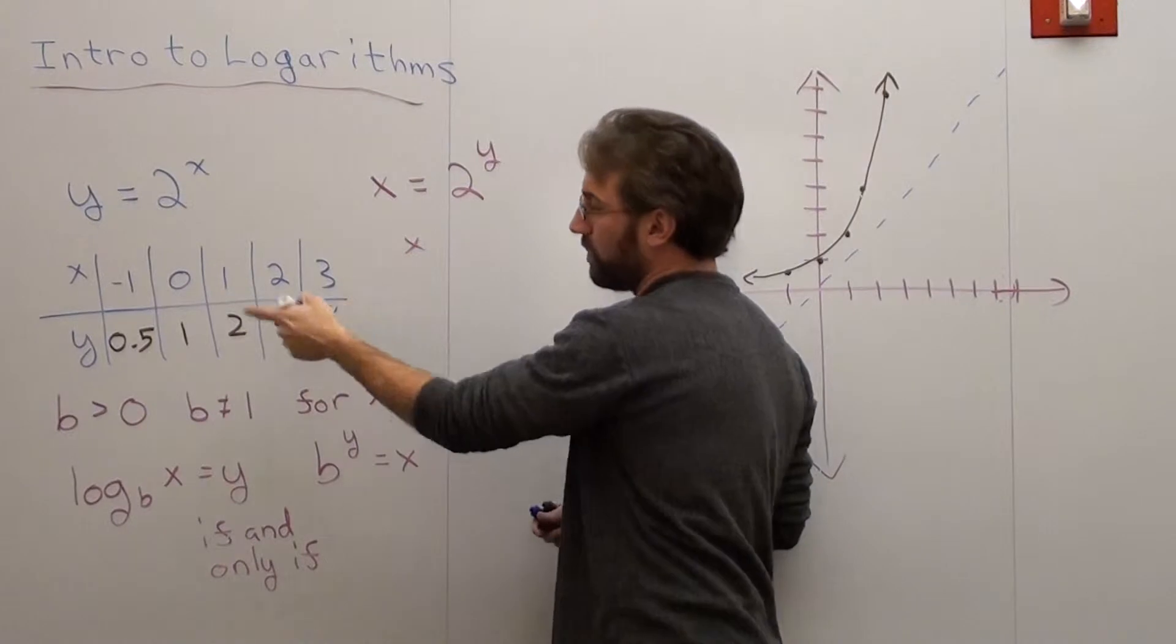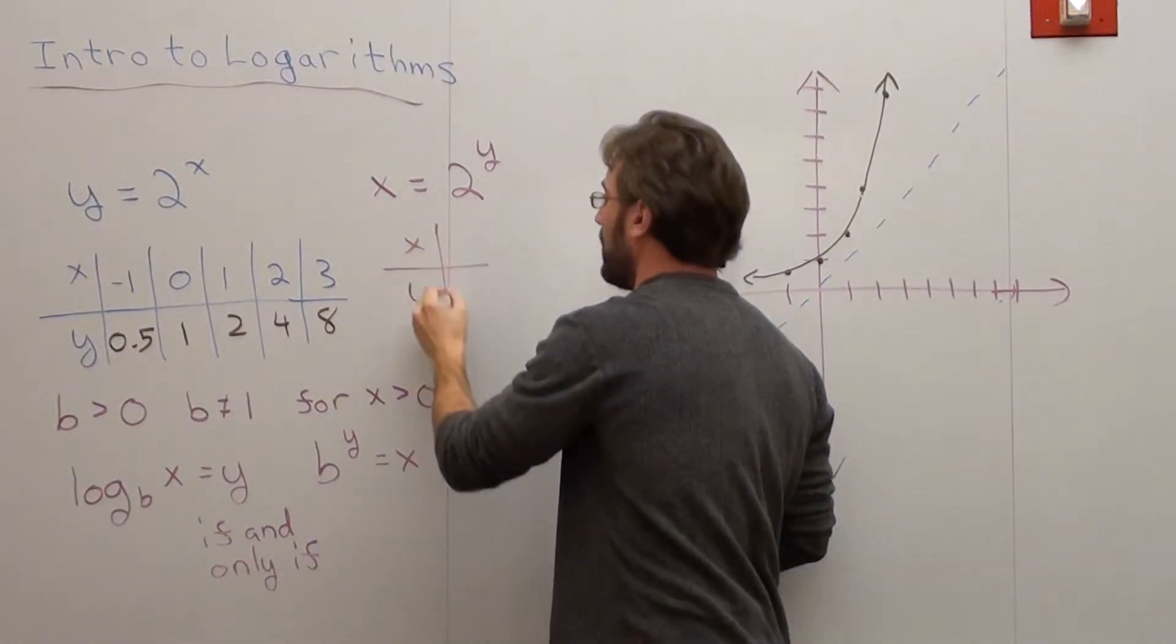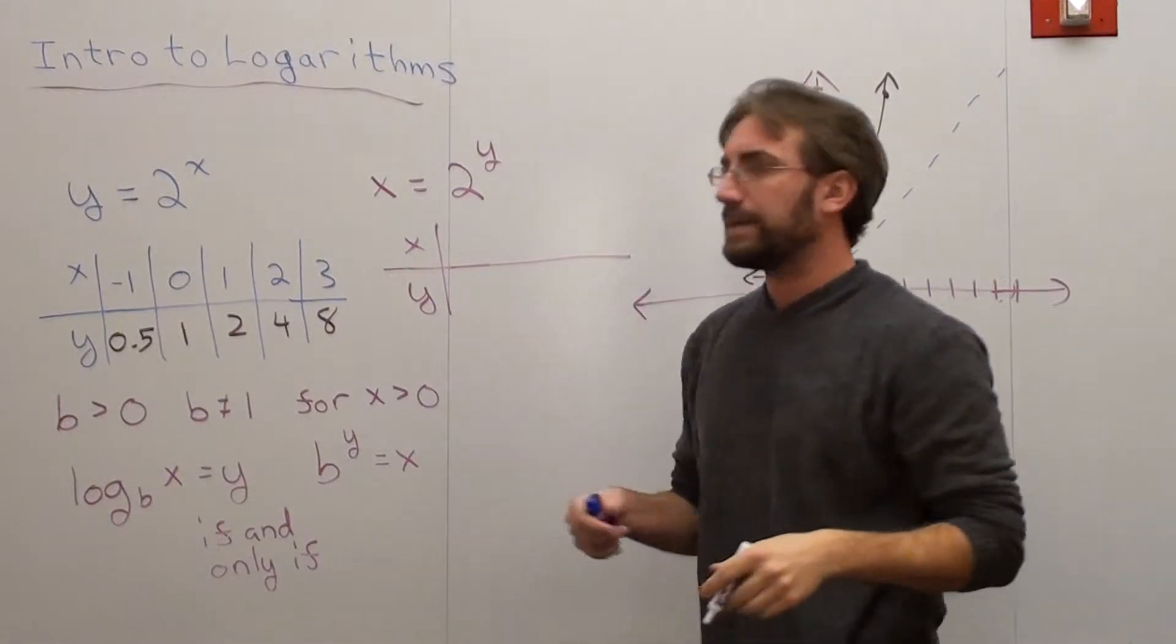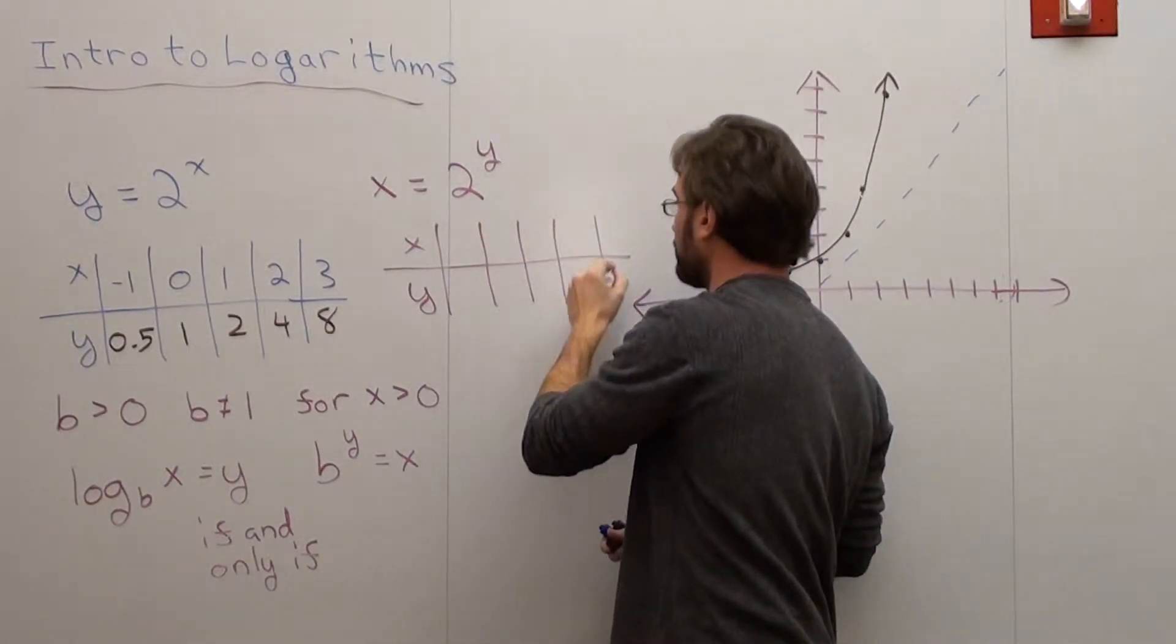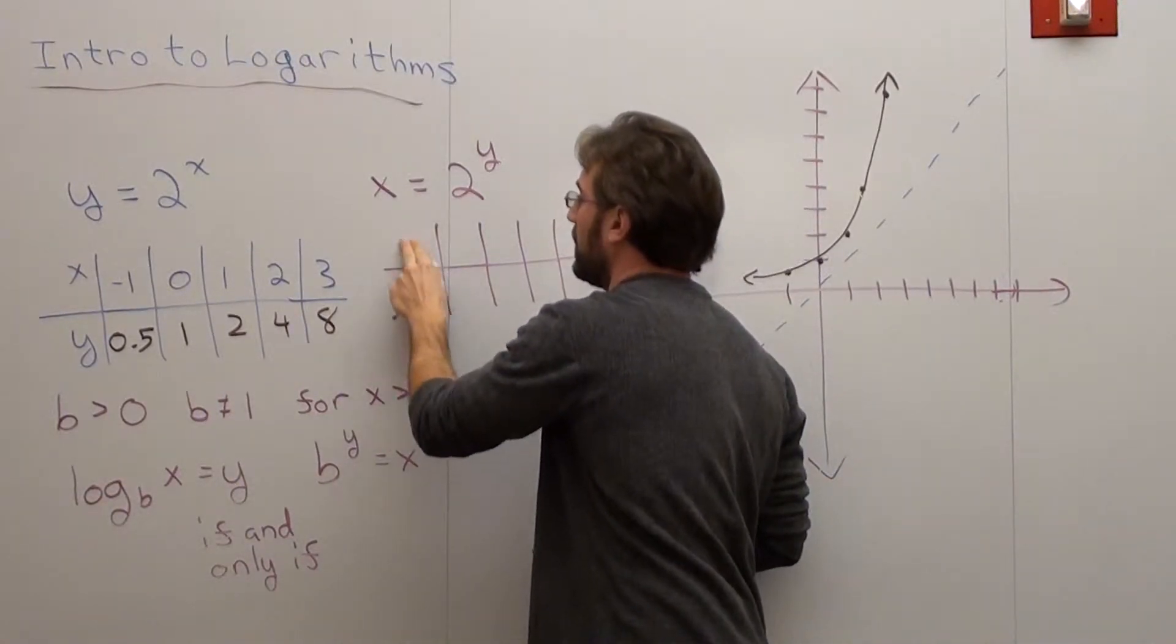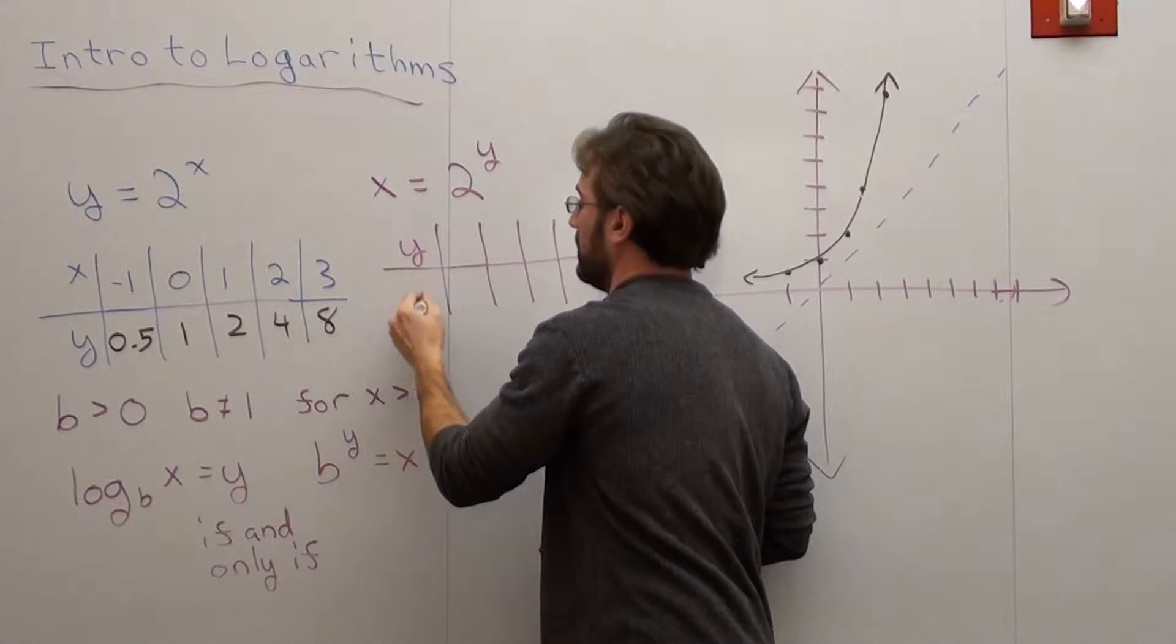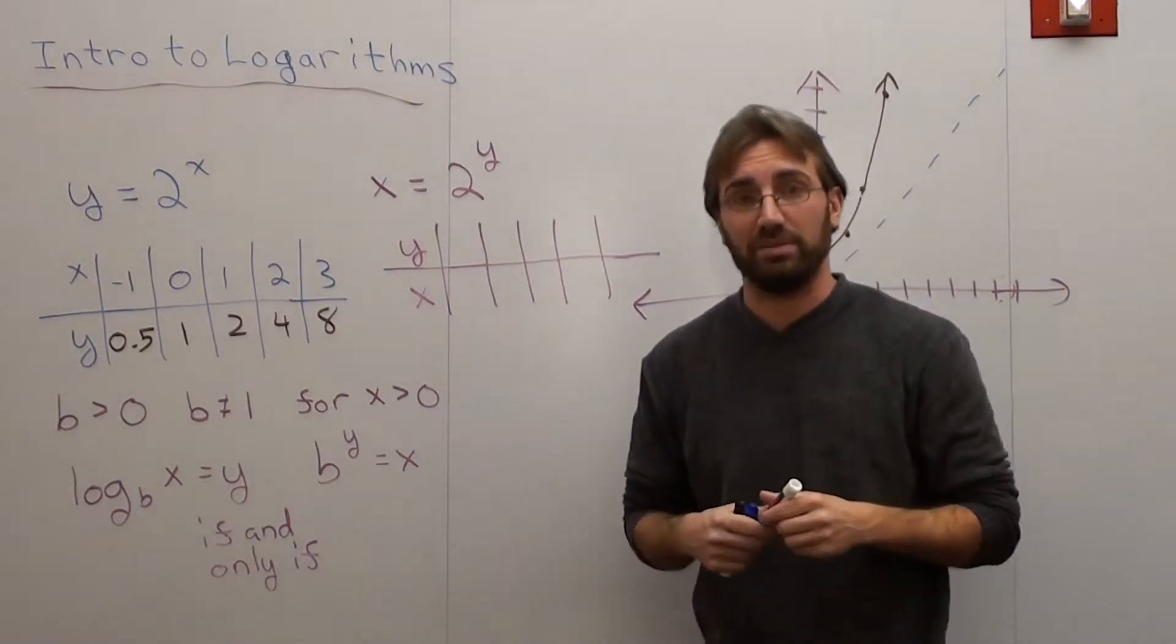And we go ahead and we make a table. And we did five values, so we'll do five values again. Now, the values that I'm going to pick are... Pardon me. I actually also want to flip this as well. And we'll see what happens.